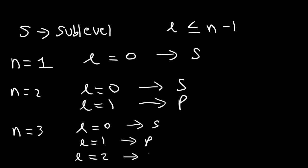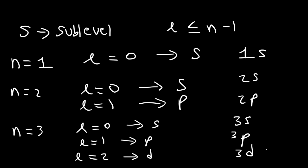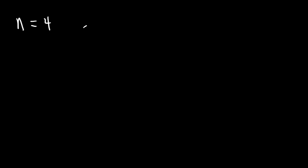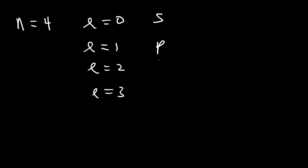If you look at the electron configuration of certain elements, you'll see that there's one s but no such thing as one p. In the second energy level, you have two s and two p, but two d doesn't exist. In the third energy level, you have three s, three p, three d, but three f is impossible. For the fourth energy level, you have four sublevels — L can be zero, one, two, or three — corresponding to four s, four p, four d, and four f.